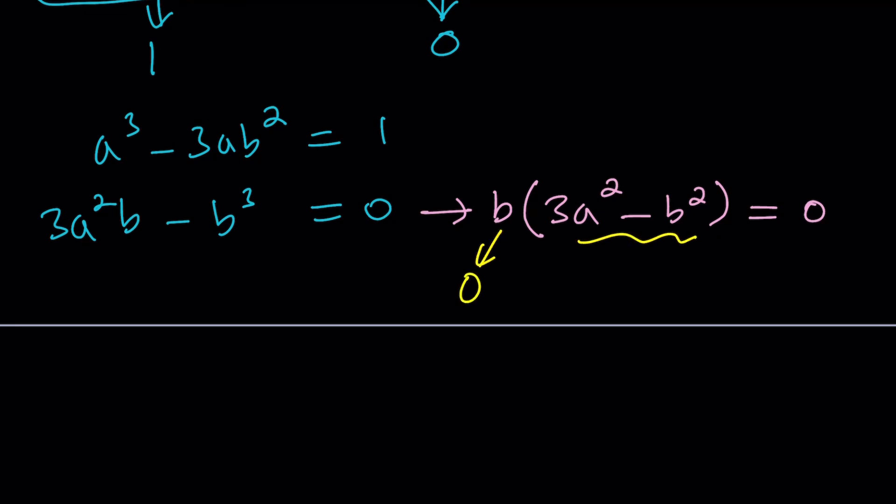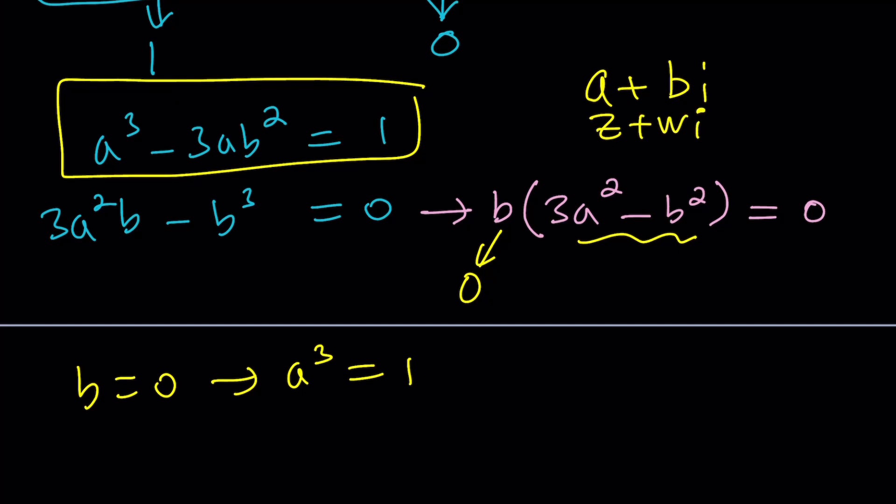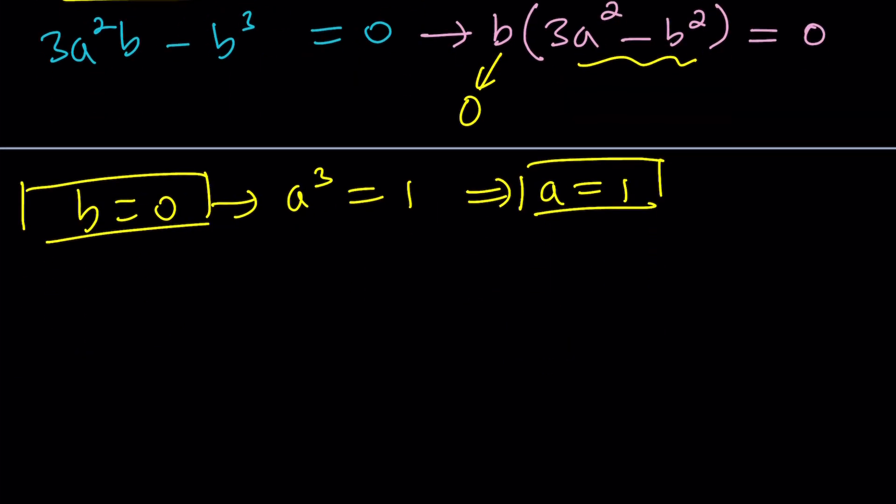b equals 0 gives you something interesting, because if you plug it into the first equation, you get a cubed equals 1. And remember, a is a real number. a and b, when you write a complex number in the form of a plus bi, a and b are supposed to be real. So, from here, a equals 1. So, what does that give you? b equals 0, a equals 1. That means 1. So, 1 cubed is equal to 1. That's one of the solutions. 1 is a solution.